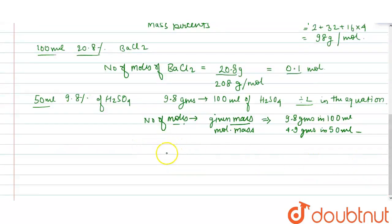Now, if we calculate the number of moles, it would be 4.9 divided by 98, which comes out to be 0.05 moles.